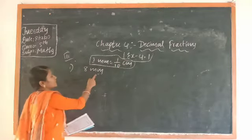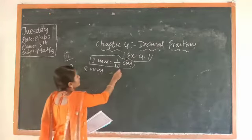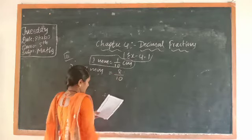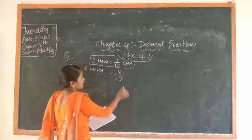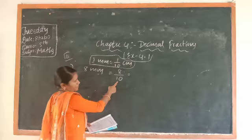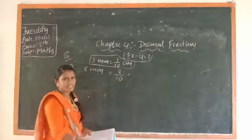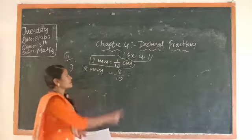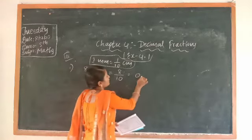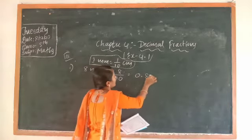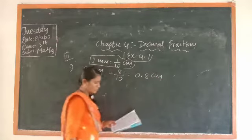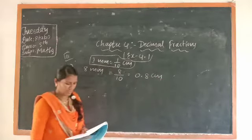What about 8 millimeter? You should write 8/10 centimeter. We are in decimal — this is the fraction form. You have to write in decimal form: 8/10 is 0.8 centimeter.